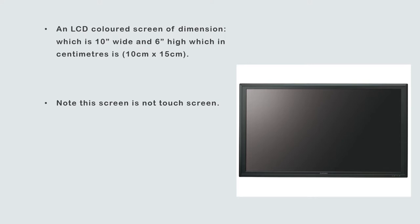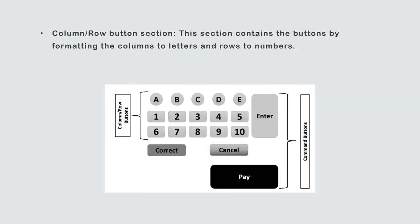The basic thing is that in a vending machine there is a screen called the dimension — it is an LCD screen which is 10 inches wide and 6 inches high, and it is not a touch screen. In the vending machine we can also see a column and row button section, which works in the payment process. For example, if you buy a 60-dollar item, you swipe the card and dial 60, then pay.